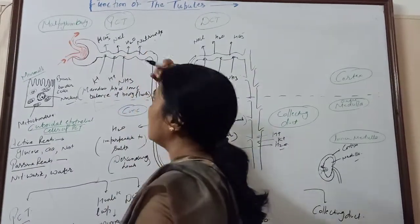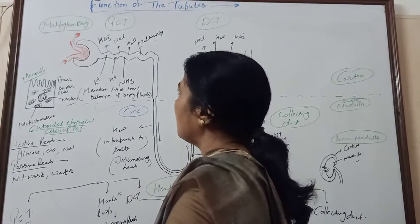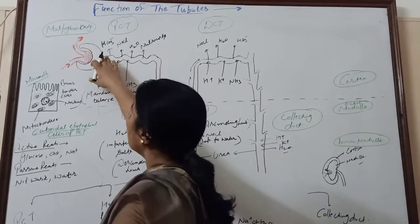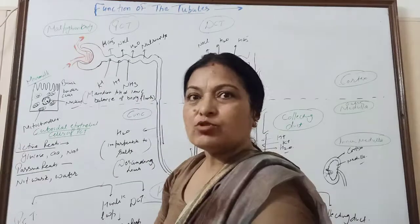Nitrogenous waste, passive absorption. In this place, 70-80% of electrolytes are absorbed.